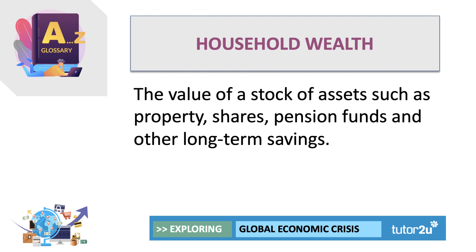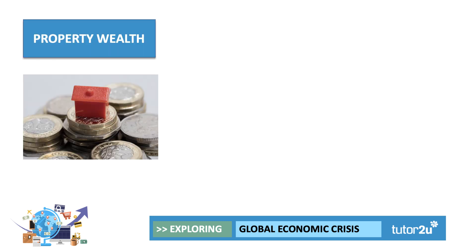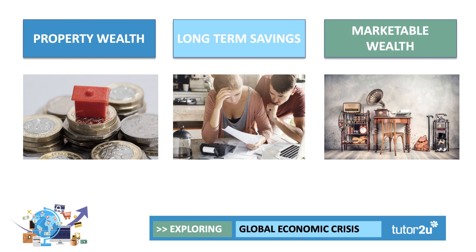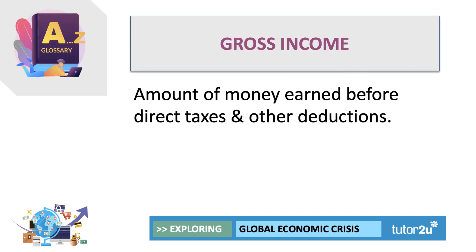Wealth is basically defined as the value of a stock of assets that you own - such as property, shares, pension funds, and long-term savings. For most people, the biggest single source of wealth is property - what we call the equity in a property, or household wealth tied up in bricks and mortar. People can also accumulate wealth through long-term savings in a bank account, a pension fund, or other savings vehicles. Additionally, assets with a market value - like antiques, fine wines, or a family heirloom - could be included in what we call marketable wealth.